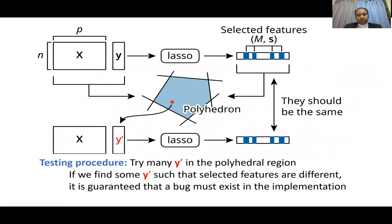This is the procedure of the Foley-Hydro region. We know that LASO is very popular for selecting features. Here we can see that from our input data set X and Y, we can easily get relevant features in the data set. After that, we can construct the Foley-Hydro region.